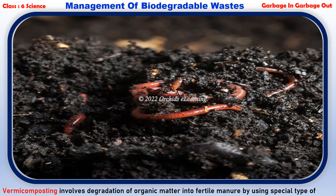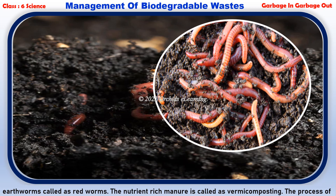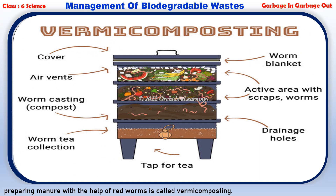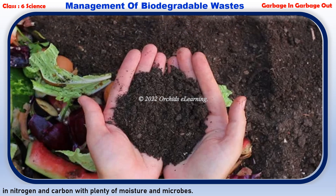Vermicomposting involves the degradation of organic matter into fertile manure by using a special type of earthworm called red worms. The nutrient-rich manure produced is called vermicompost. The red worm is a type of earthworm that lives in soil rich in organic matter. Organic soils are rich in nitrogen and carbon, with plenty of moisture and microbes.